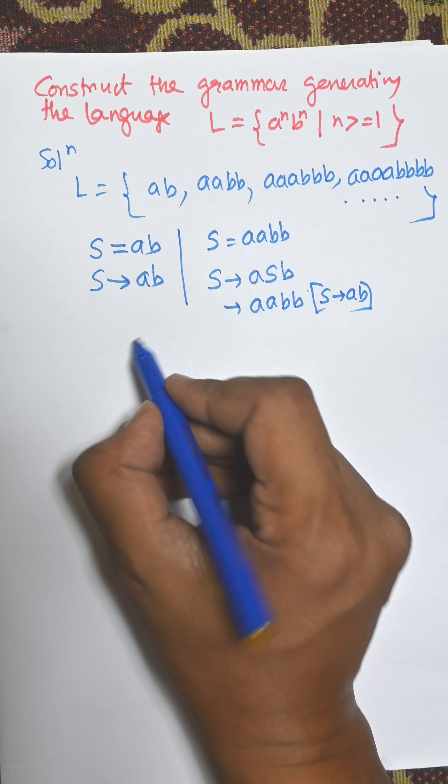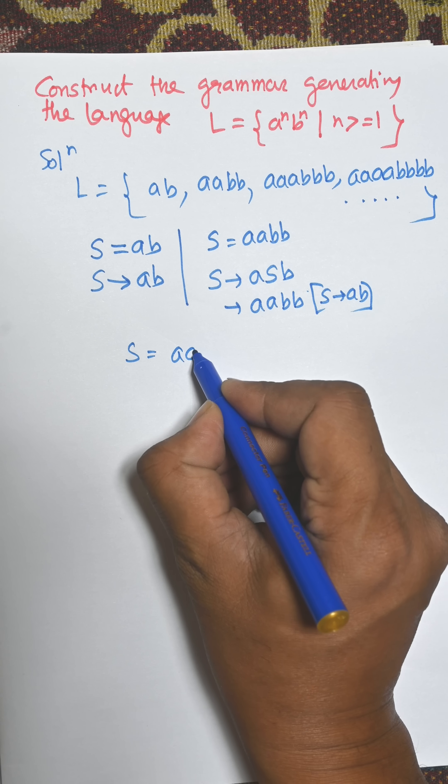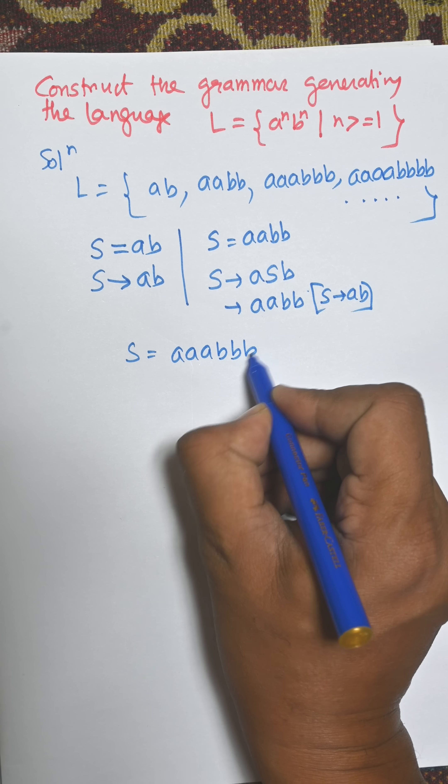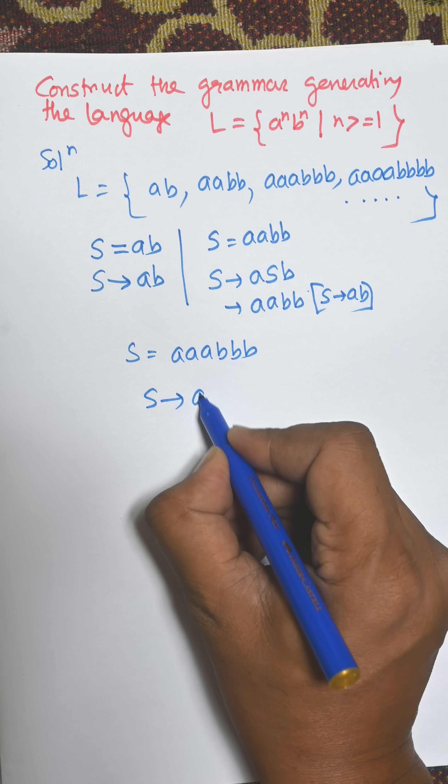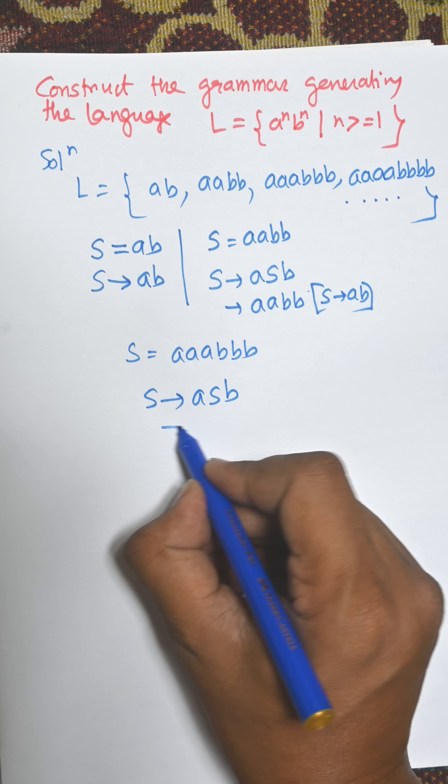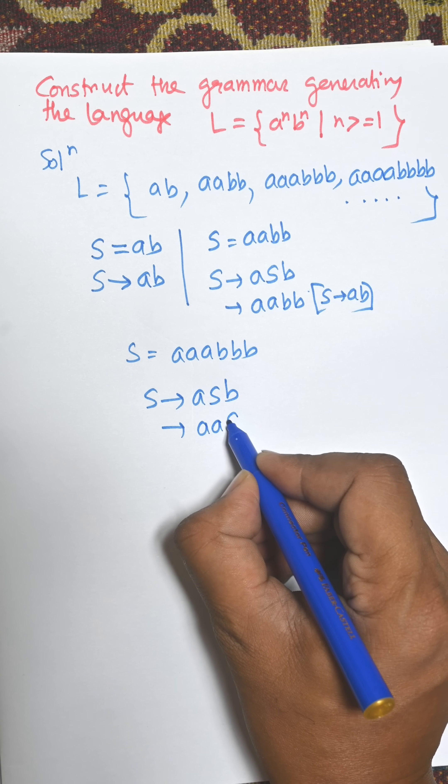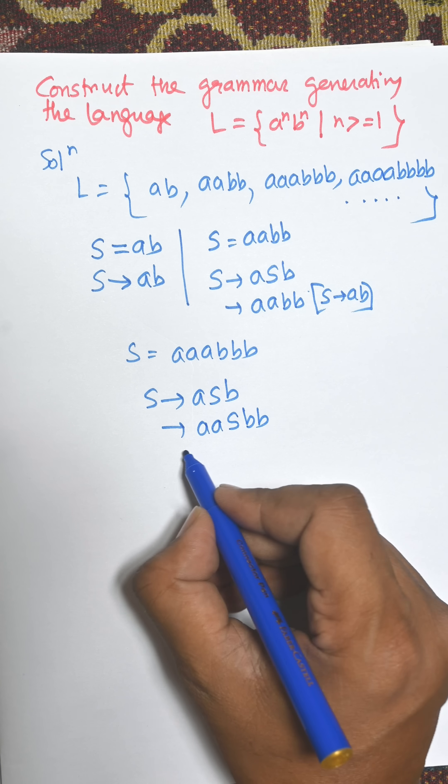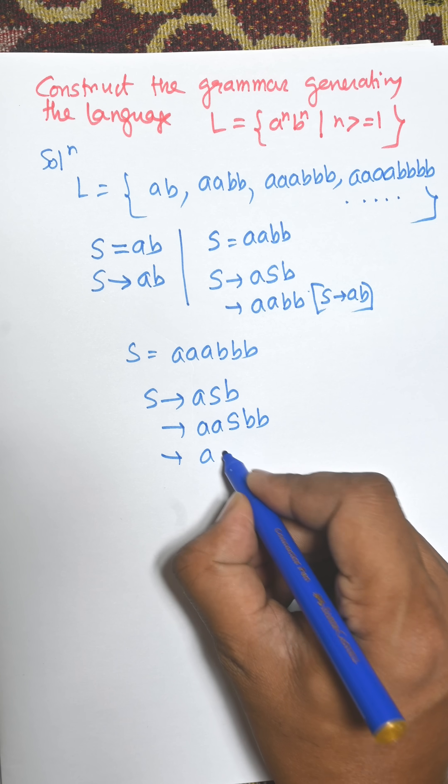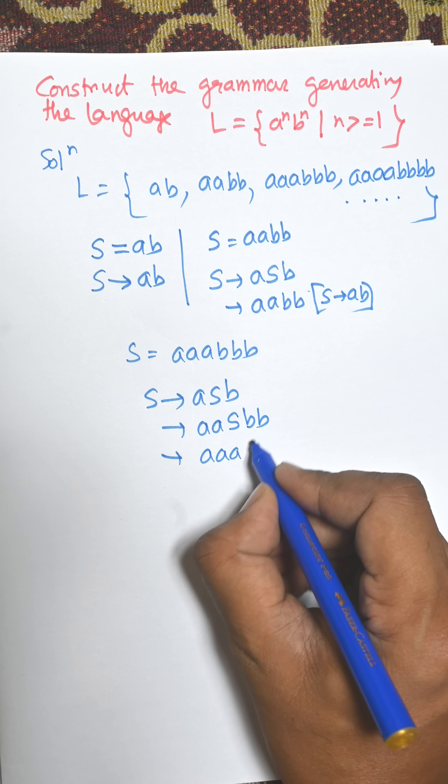Now consider AAABBB. We use S goes to ASB. Then for S again, we use S goes to AASB. Finally, putting the value of S as AB, we get AAABBB.